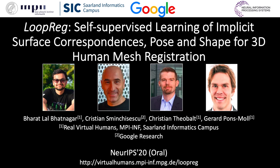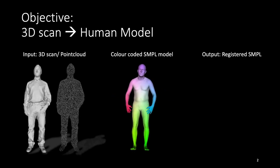Welcome everyone. This is Bharat and I'd like to present our work Loop-Rig: Self-Supervised Learning of Implicit Surface Correspondences, Pose and Shape for 3D Human Mesh Registration. The input to our method is a 3D scan or a point cloud and we output a registered body model.